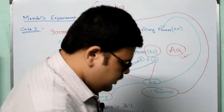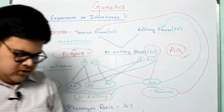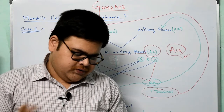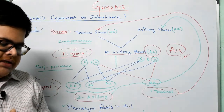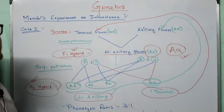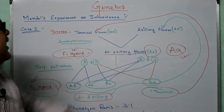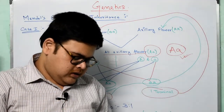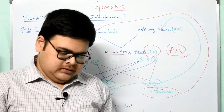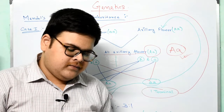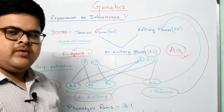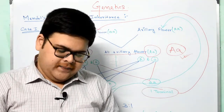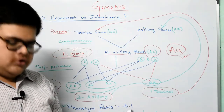Now we go to case 2. He took a pure tall plant crossed with dwarf plants and the result was the same — similar to what happened with terminal and axillary flowers. He took one pure tall and one pure dwarf plant. In case 3, he took one round and one wrinkled. The same thing was seen: phenotypic ratio of 3:1 and genotypic ratio of 1:2:1.